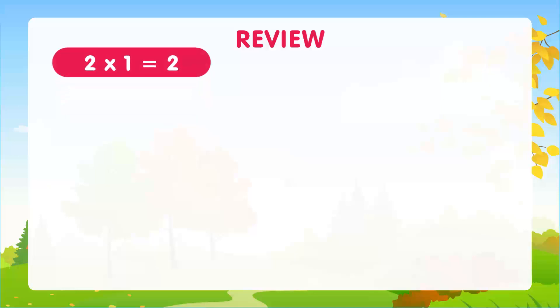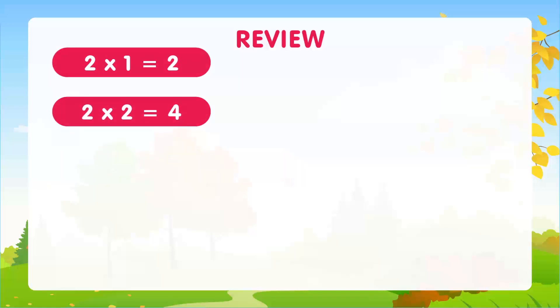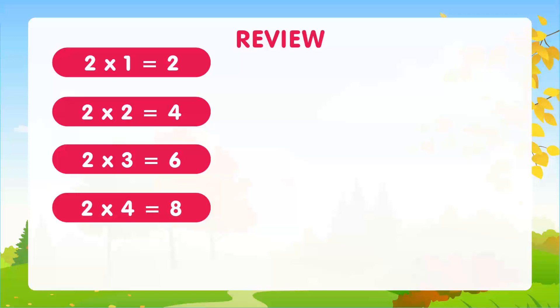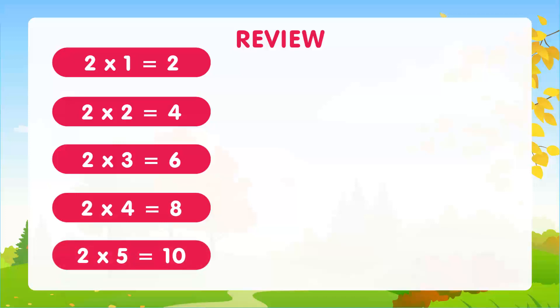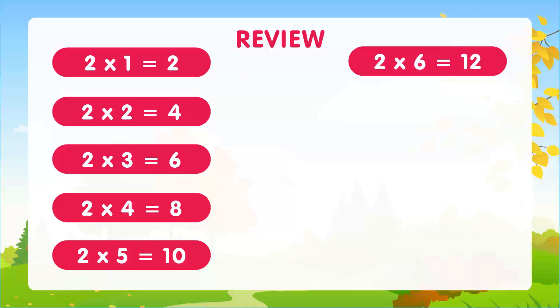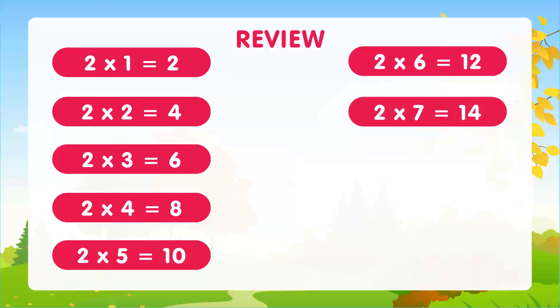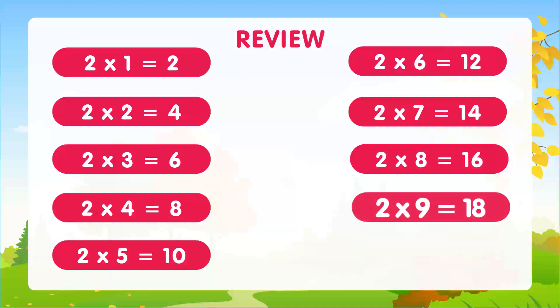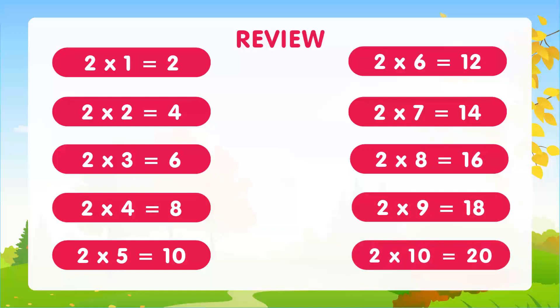Great job! You just learned the multiplication table of 2 from 2 times 1 to 2 times 10 using animals. Let's review what we learned today: 2 times 1 is 2, 2 times 2 is 4, 2 times 3 is 6, 2 times 4 is 8, 2 times 5 is 10, 2 times 6 is 12, 2 times 7 is 14, 2 times 8 is 16, 2 times 9 is 18, and 2 times 10 is 20.